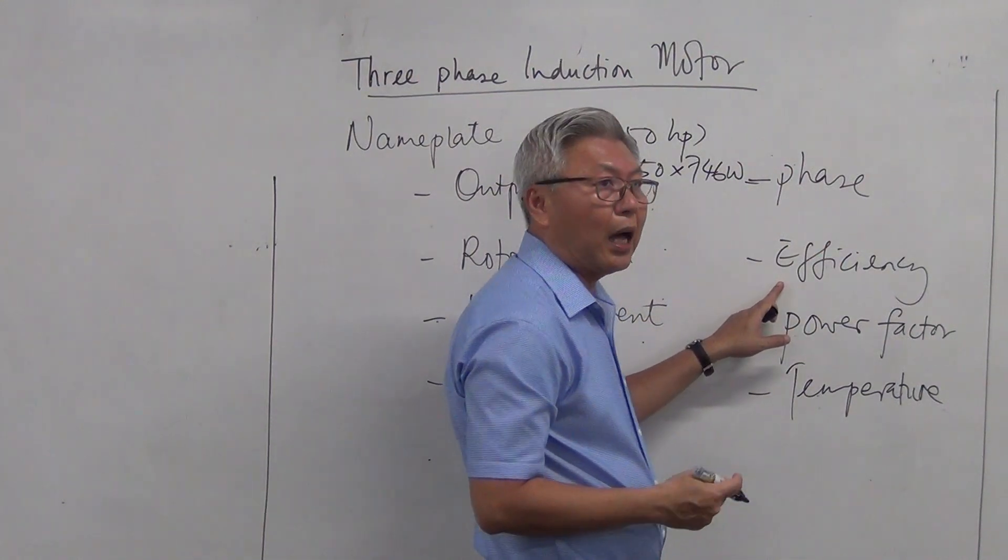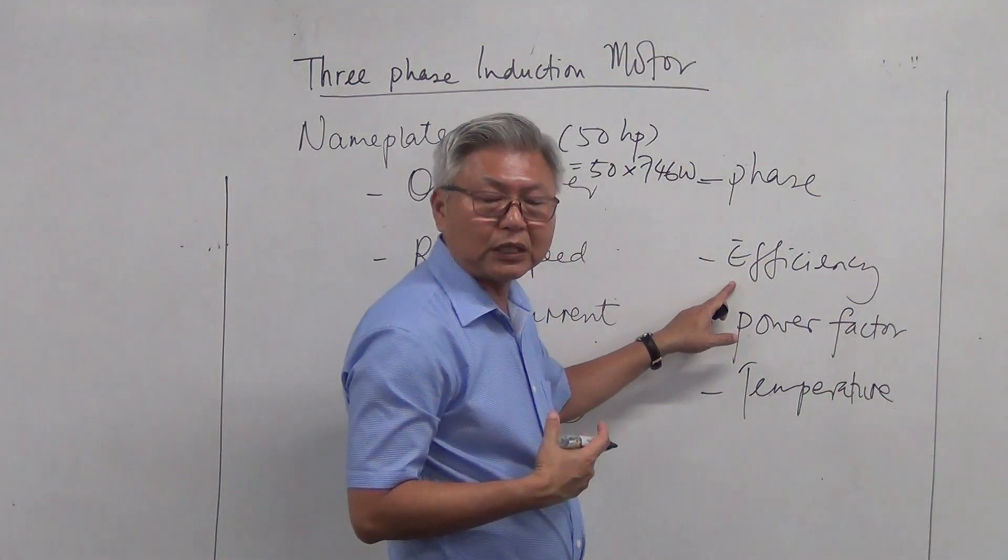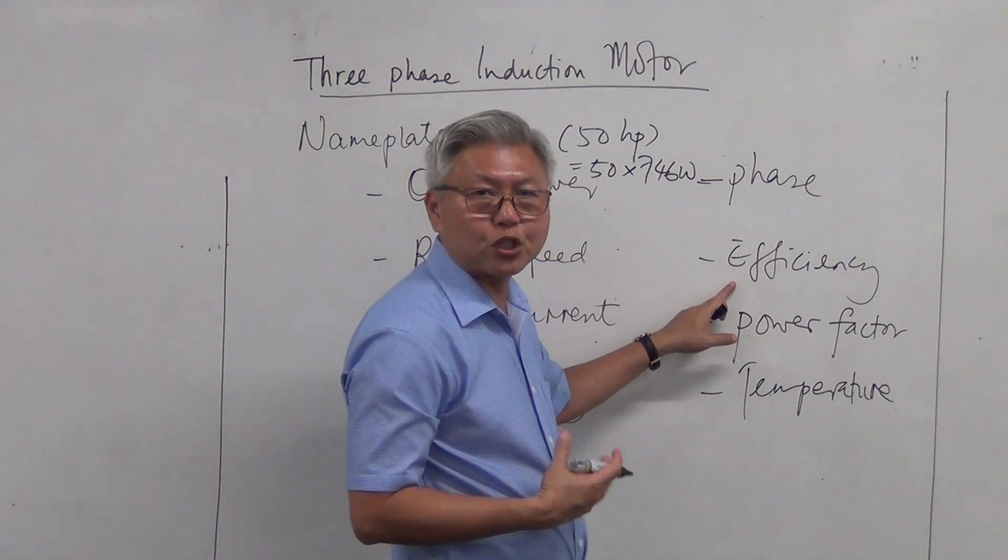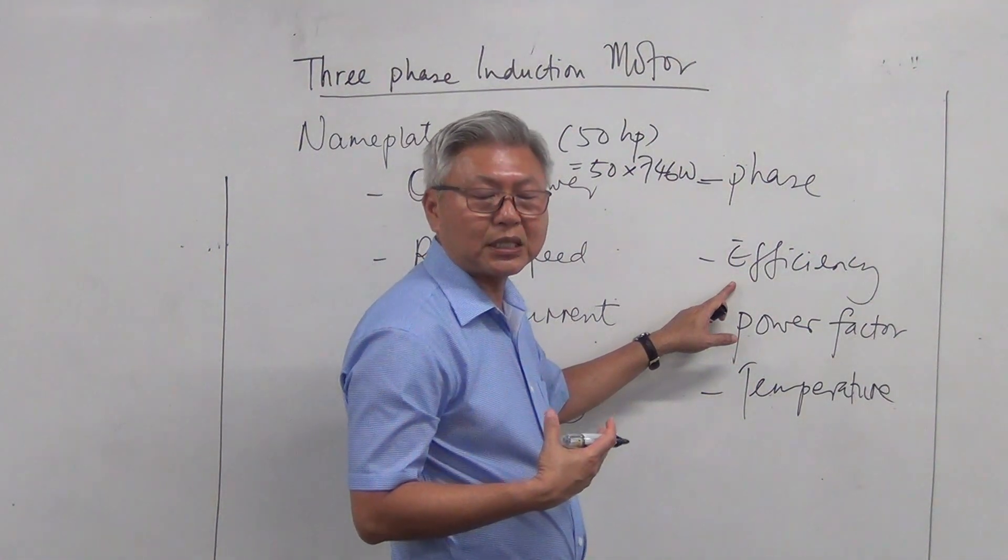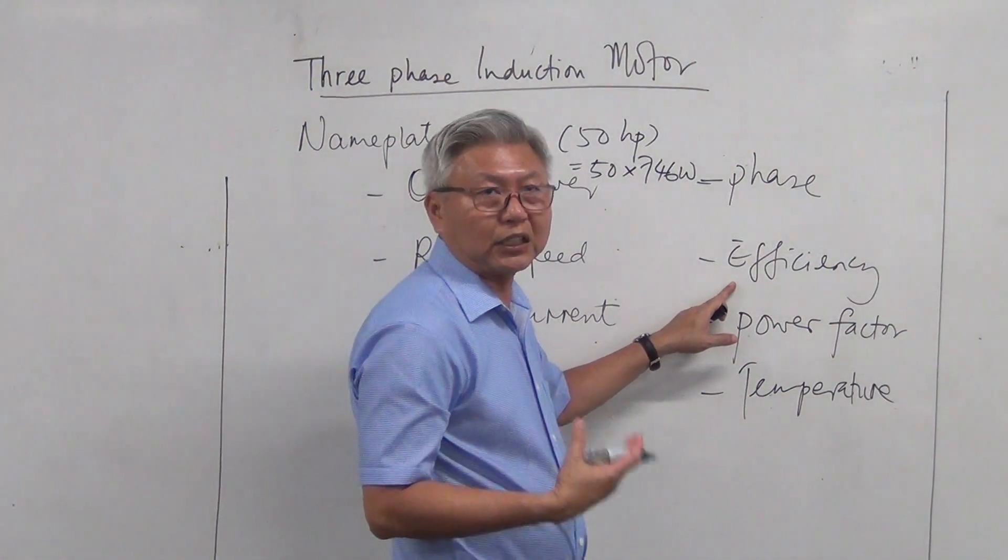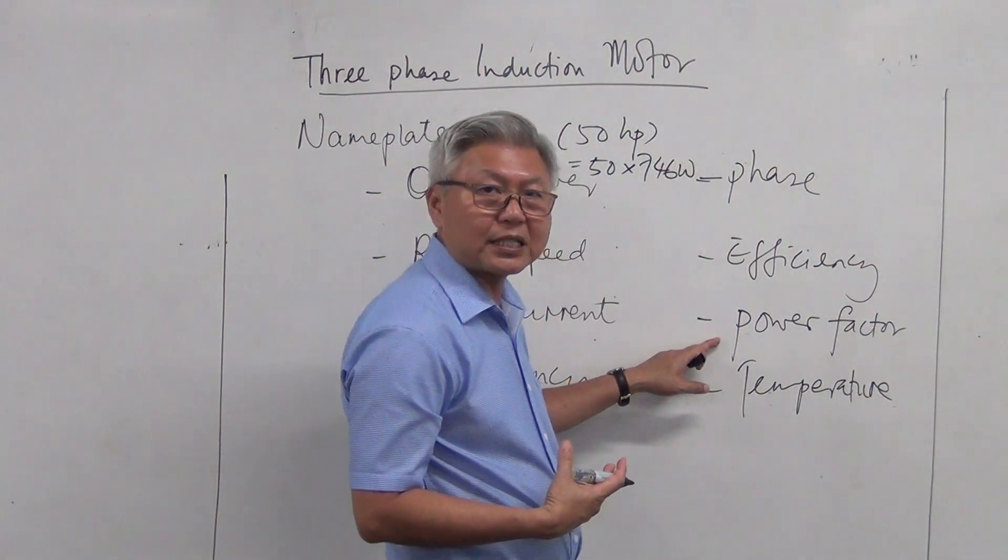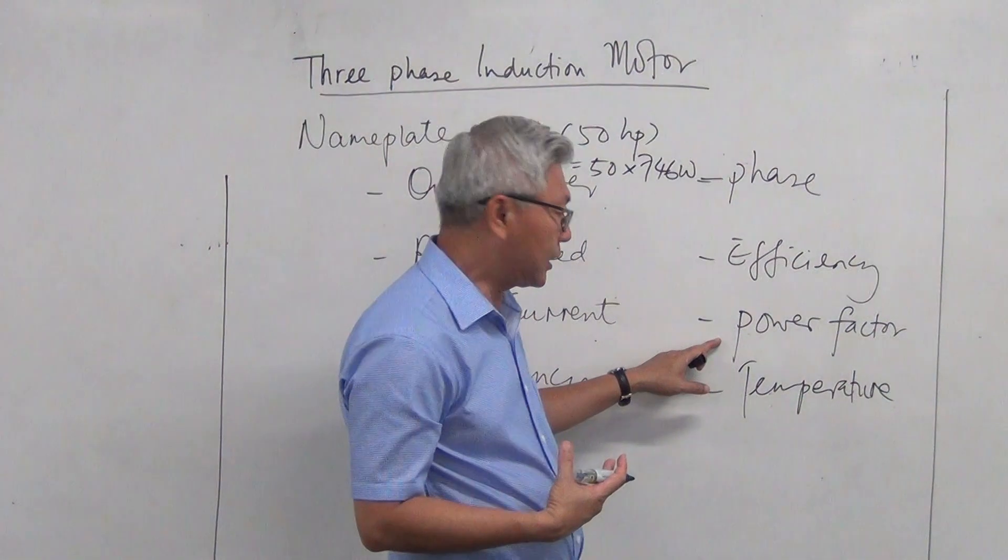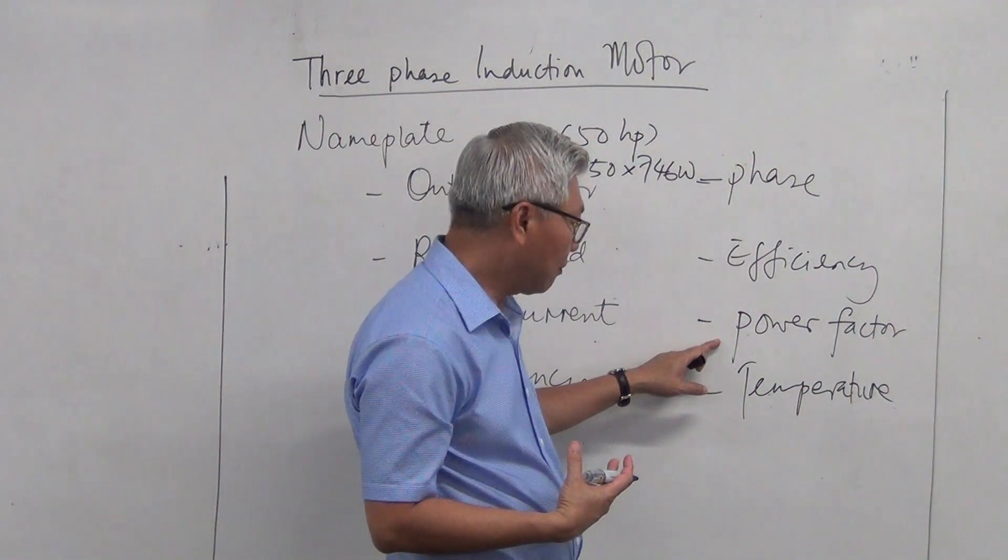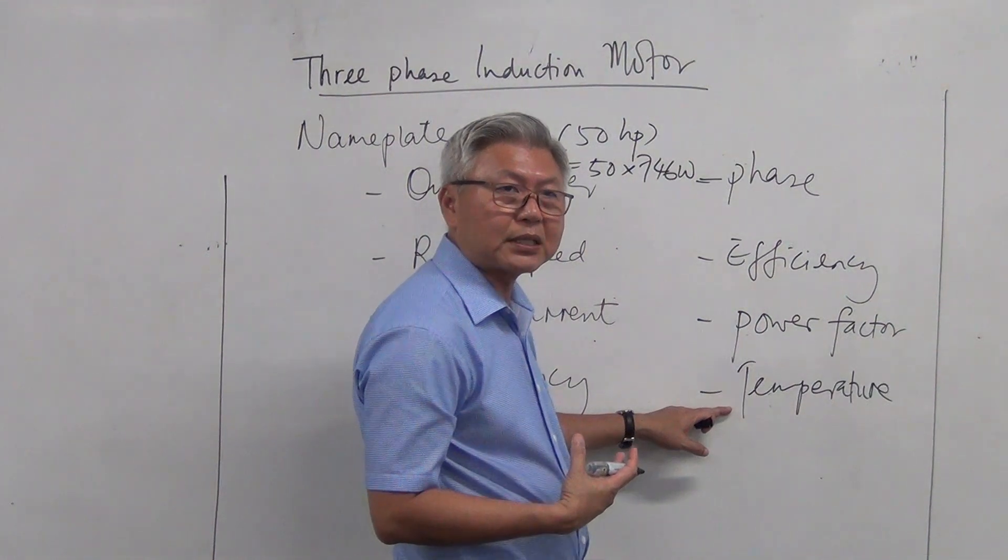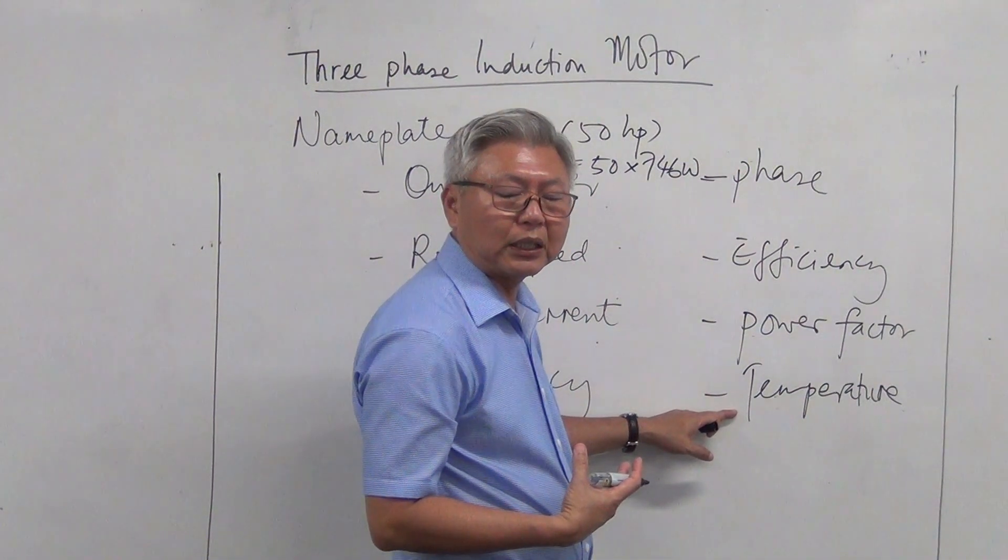Efficiency, even though in a practical world it's very impossible to get 100% efficient motor. So efficiency gives you the estimated efficiency. Usually, let's say 85%, 87% efficiency. Power factor, that is our cosine theta in AC theory, the phase angle between the voltage and current. Temperature, what is the highest temperature that the motor can work in, in that condition.